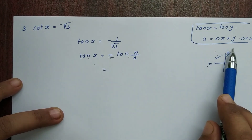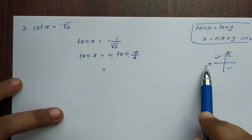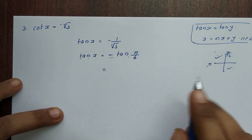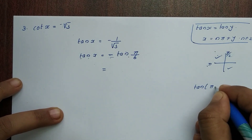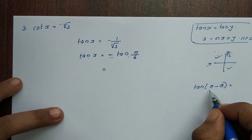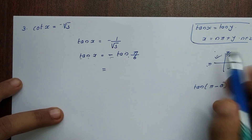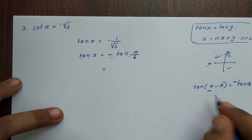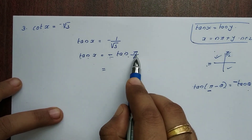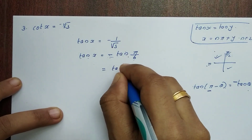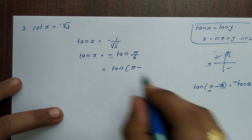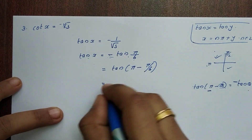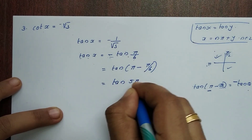In the second quadrant, we use the form tan(π − θ). Tan(π − θ) is negative, and the sign changes. So minus tan(π/6) equals tan(π − π/6), which equals tan(5π/6). Therefore tan x equals tan(5π/6).